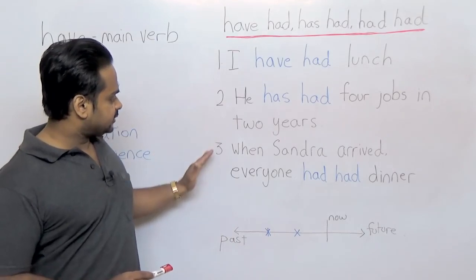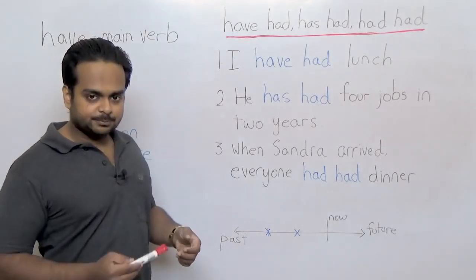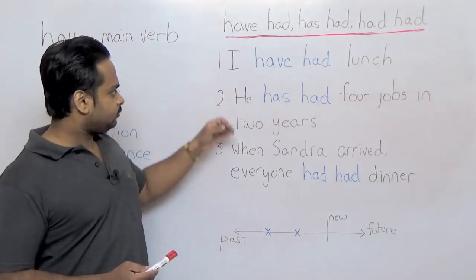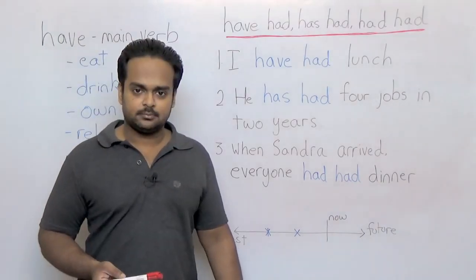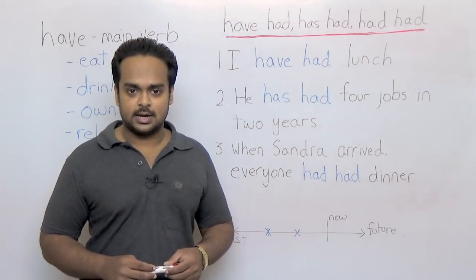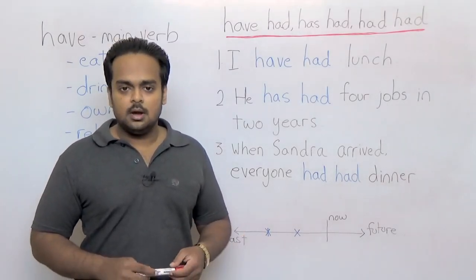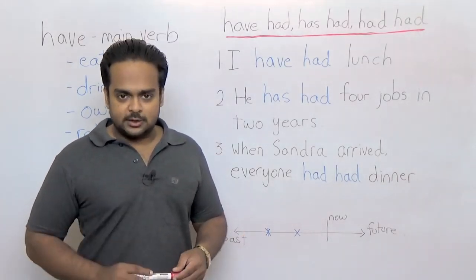Over here I have three sentences that are going to help us understand these forms. Take a look at the first sentence, I have had lunch. What a strange sounding sentence, right? I have had lunch. Well, let me tell you a little secret.